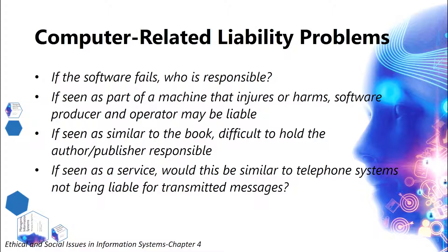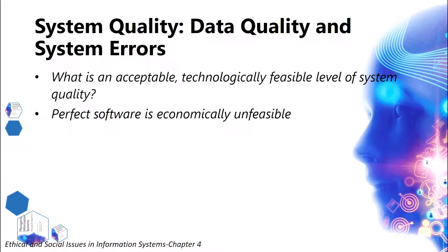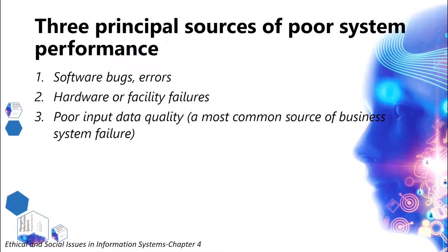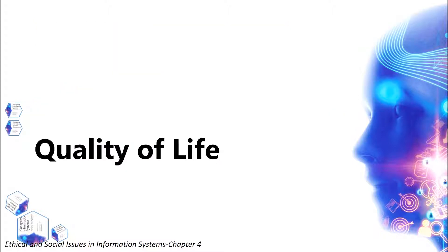Computer-related liability problems: if the software fails, who is responsible? If seen as part of a machine that injures or harms, the software producer and operator may be liable. If seen as similar to a book, it is difficult to hold the author or publisher responsible. If seen as a service, would this be similar to telephone systems not being liable for transmitted messages? Regarding system quality, data quality, and system errors: what is an acceptable, technologically feasible level of system quality? Perfect software is economically unfeasible. The three principal sources of poor system performance are software bugs and errors, hardware or facility failures, and poor input data quality — the most common source of business system failure.